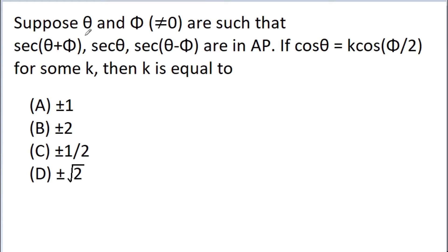In this video, we have given that theta and phi, not equal to 0, are such that sec(theta + phi), sec theta, and sec(theta - phi) are in AP. If cos theta is equal to k times cos(phi/2) for some k, then we have to find the value of k.